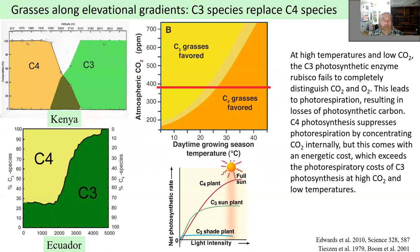There is a very clear and important transition between C4 and C3 grasses at about 2,000 meters, with examples from Kenya and Ecuador. C4 plants are favored in warm environments and potentially with lower atmospheric CO2. Until recently CO2 was a constant, but now it's moving. We can predict that with a lot of global warming, C3 grasses will be increasingly favored and this transition will probably come at a lower elevation than today.